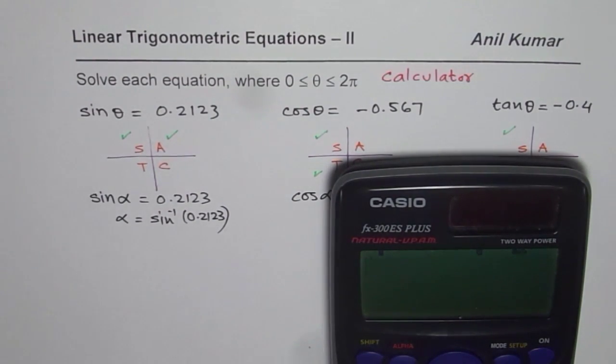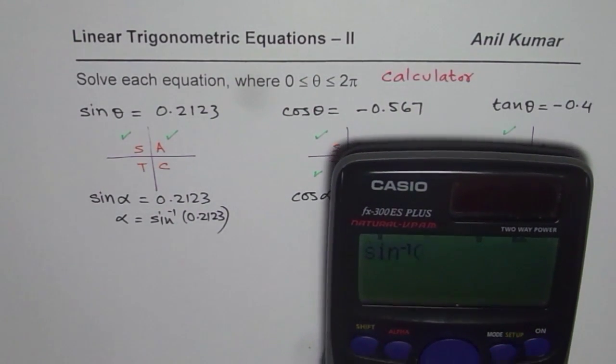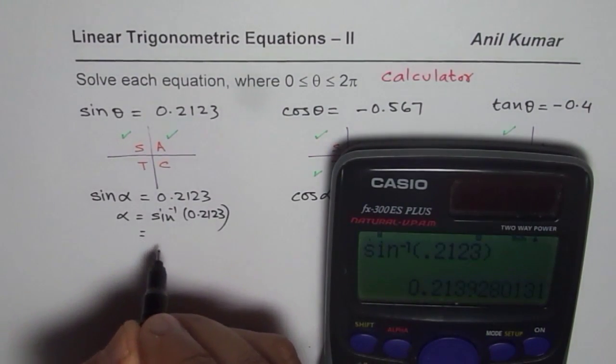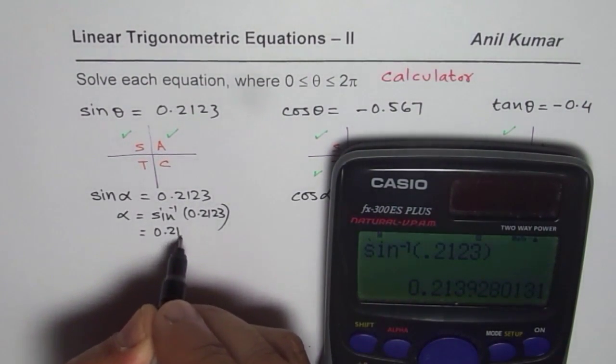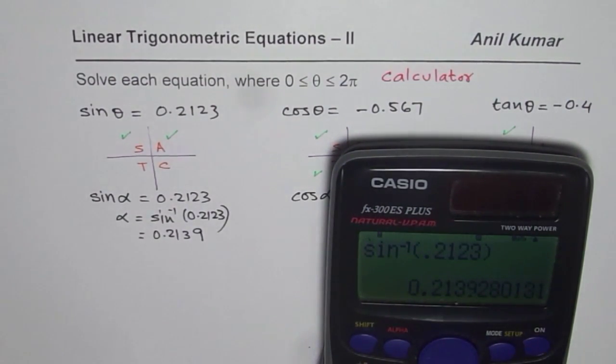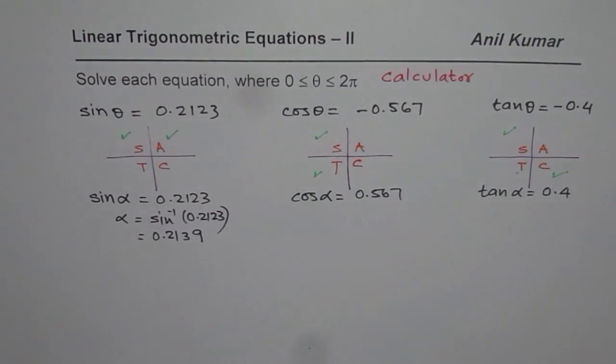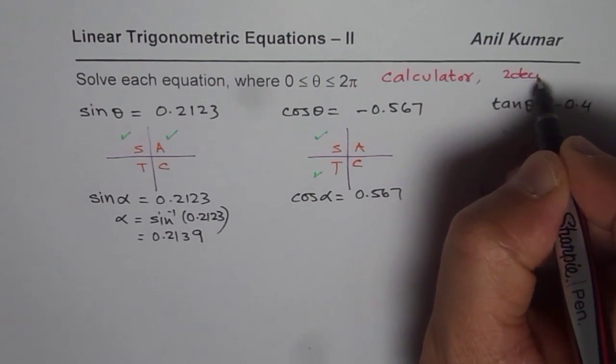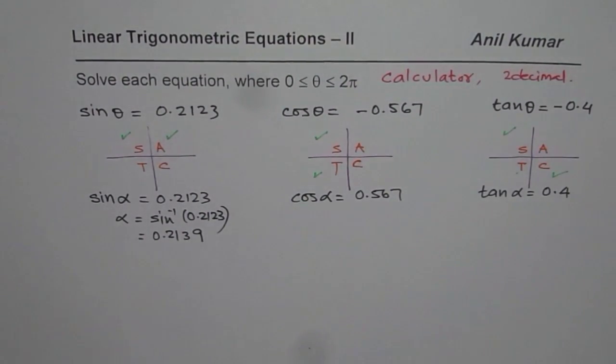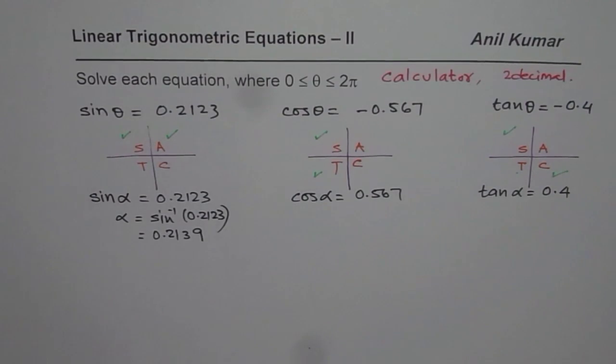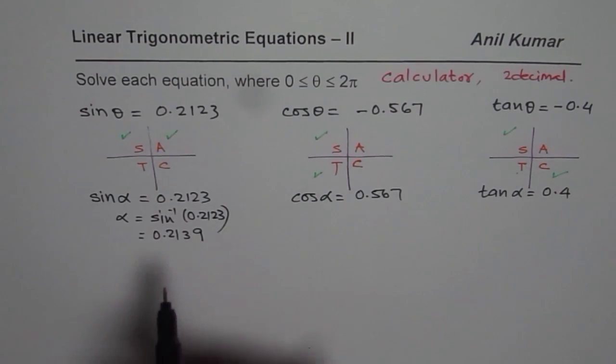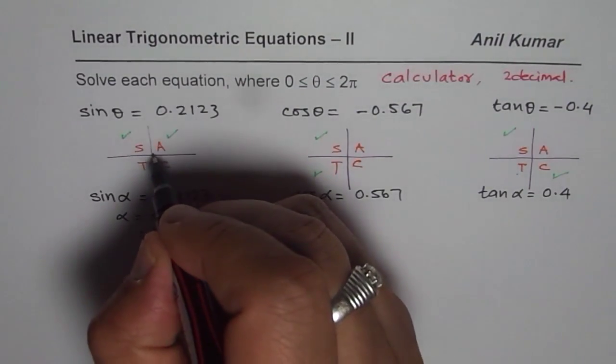So we do shift sine inverse and within bracket, 0.2123, bracket close, equals to. We get α = 0.2139. Whenever we are going to use calculator, we will round your answer to two decimal places. So that is what we are going to do in general. What we have got here is acute angle α.